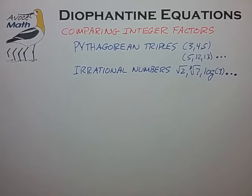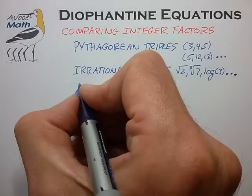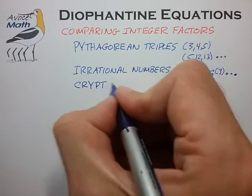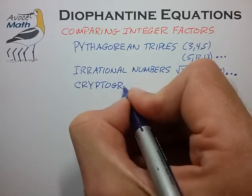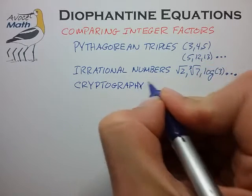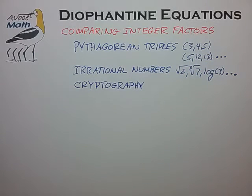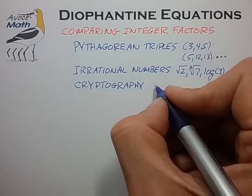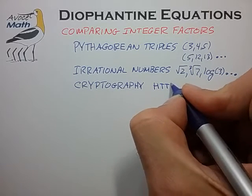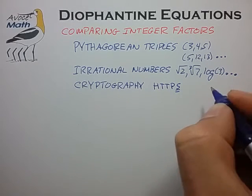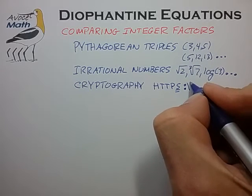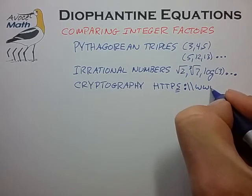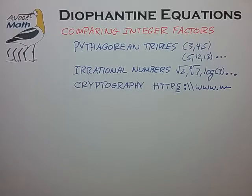Integer factors also show up prominently in the subject of cryptography. One of the more popular methods of encrypting messages involves prime numbers, and that particular method often shows up in our web browsing on secure sites — it's often the S in the HTTPS of secure websites that we visit, such as banking institutions and the like.